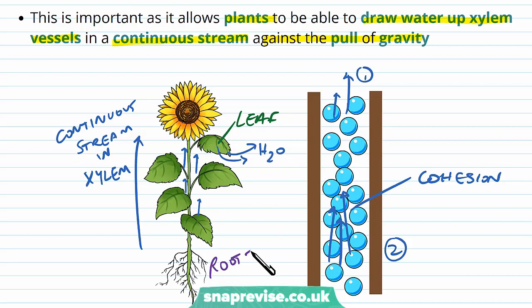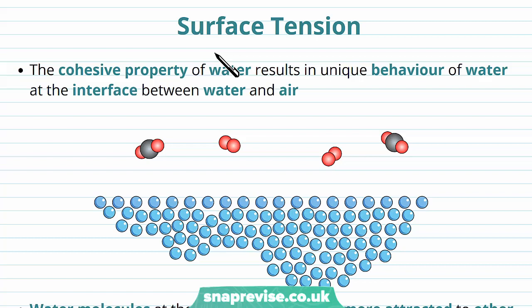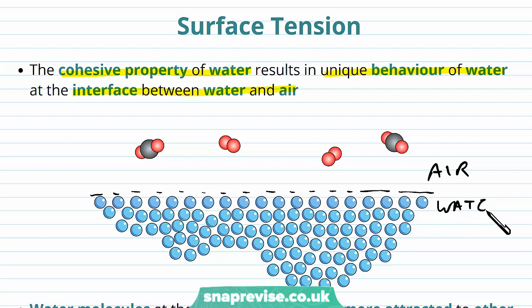Cohesion doesn't just affect the way that water moves — it affects the property it has at its surface as well. The cohesive property of water results in unique behaviour where it interfaces with the air. Liquid water and air won't mix; they will form either bubbles or they will separate out. We have this interface or boundary between the air — with things like oxygen and carbon dioxide — and the water itself. You can think of this as the surface of a puddle or the edge of a droplet.